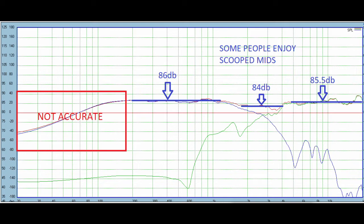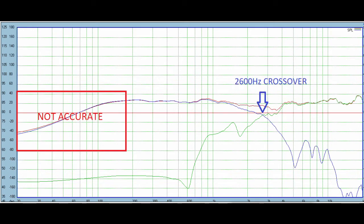You can see the mids are a little bit scooped. You have about an 86 dB speaker with an 84 dB suppressed mid-range. This is kind of that smiley-face EQ that sounds bad, but to be honest, that's what a lot of people like. They kind of like that suppressed mid-range and there's nothing wrong with that.